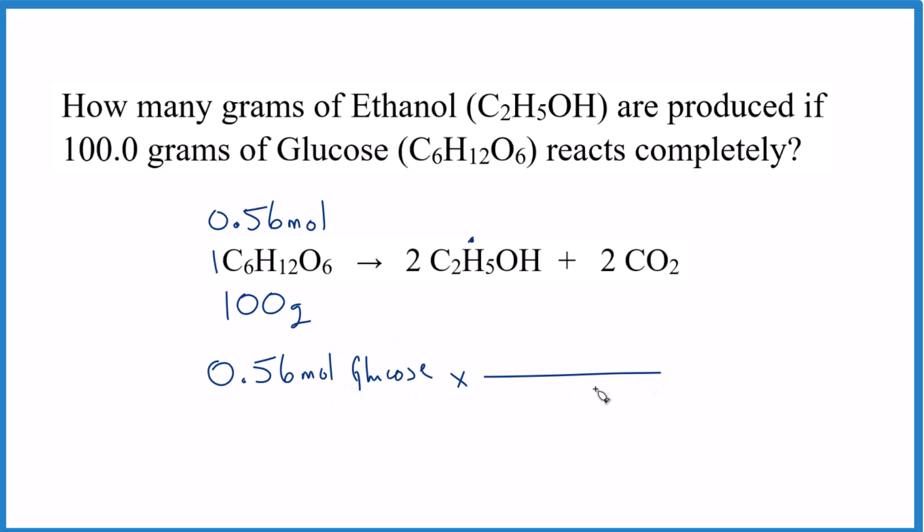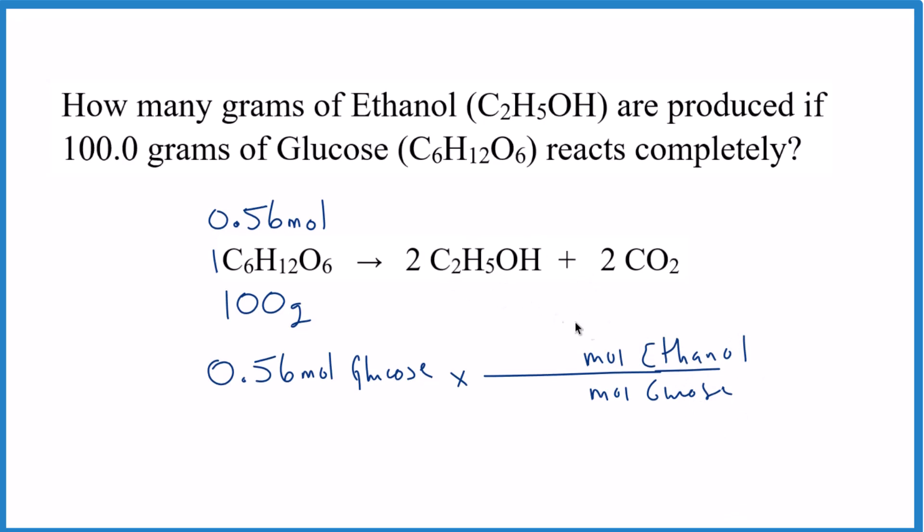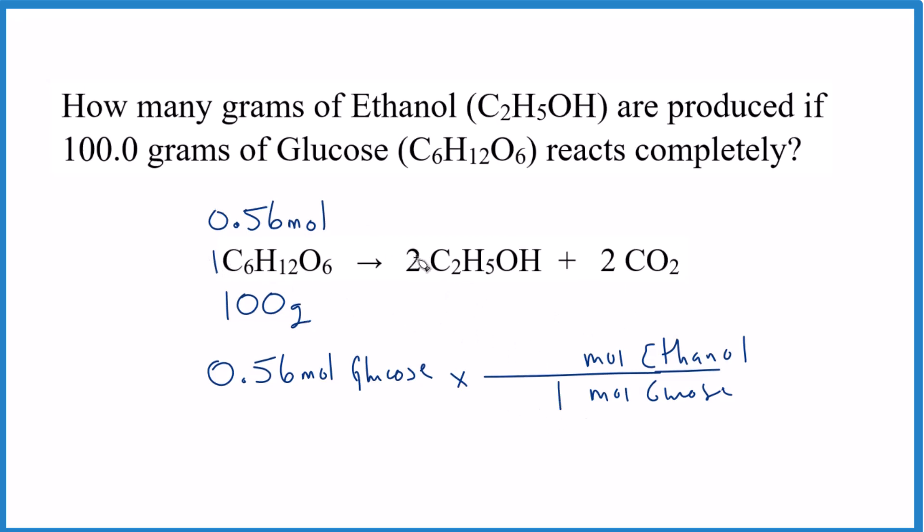We want moles of glucose to cancel out, so we need moles of glucose on the bottom, and we want to end up with ethanol, so we need moles of ethanol on the top. So this is where we go to our mole ratio. We know that for every one mole of glucose, we get two moles of ethanol.